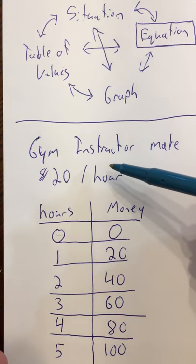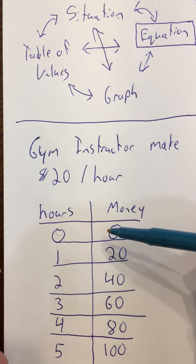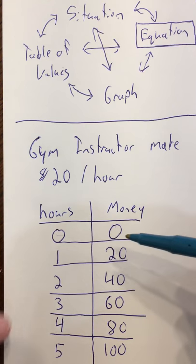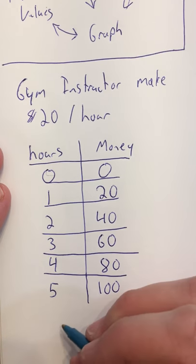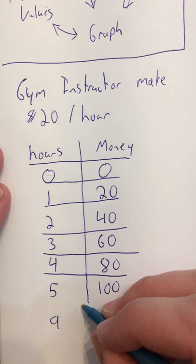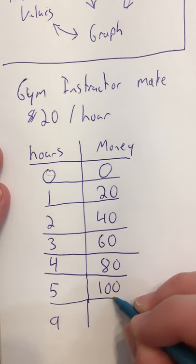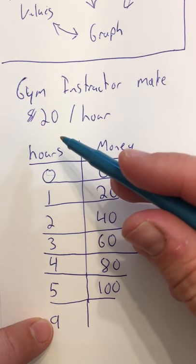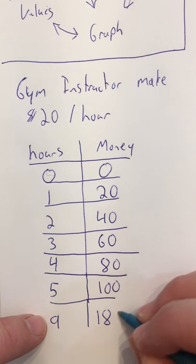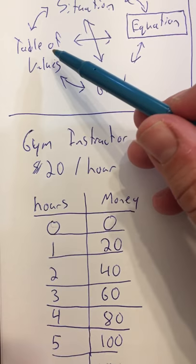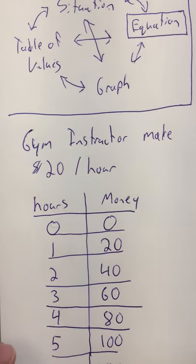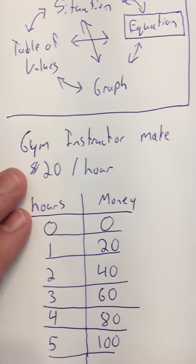That's how we go from the situation to the table of values using reasoning and multiplication. If you jumped to nine hours, nine times $20 would be $180. Now we're going to go from the table of values to the graph.